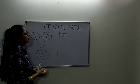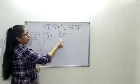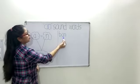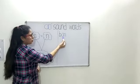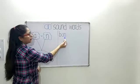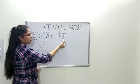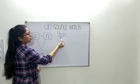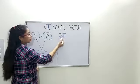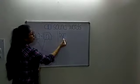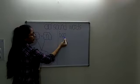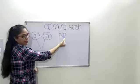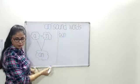The phonetic sound of B is B, and the phonetic sound of AN is AN. The combination of these two sounds is B and AN — it becomes BAN.